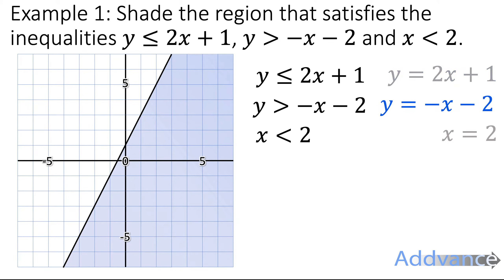Now the next one is y = -x - 2. So we have a y-intercept of -2 and a gradient of -1. It looks like this dotted line here. We shade above that because it says y is more than -x - 2.